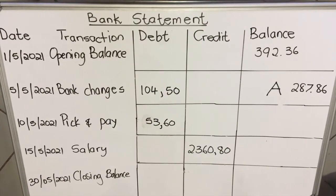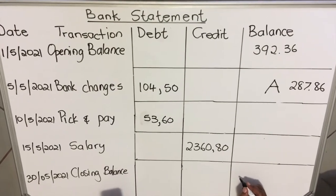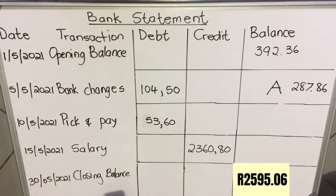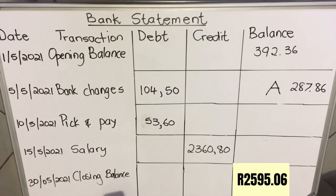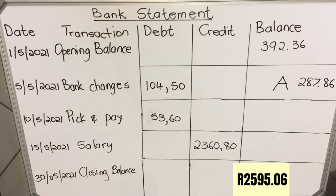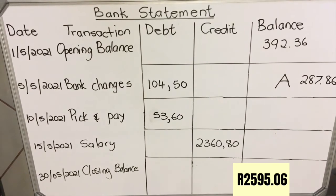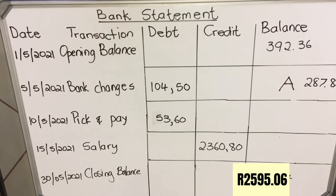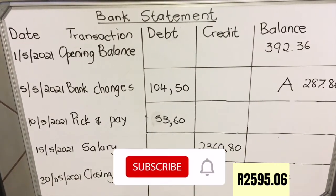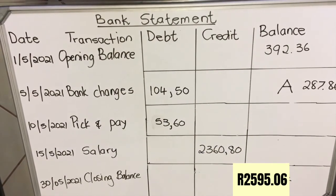Our closing balance will be the total amount after all those transactions — that is R2,595.06. When they ask for closing balance, they want the amount at that particular point. These are the things you look for, and they'll ask you questions — find this, find that. It's not difficult, you just need to practice. This is the end of our lesson, thank you for watching.